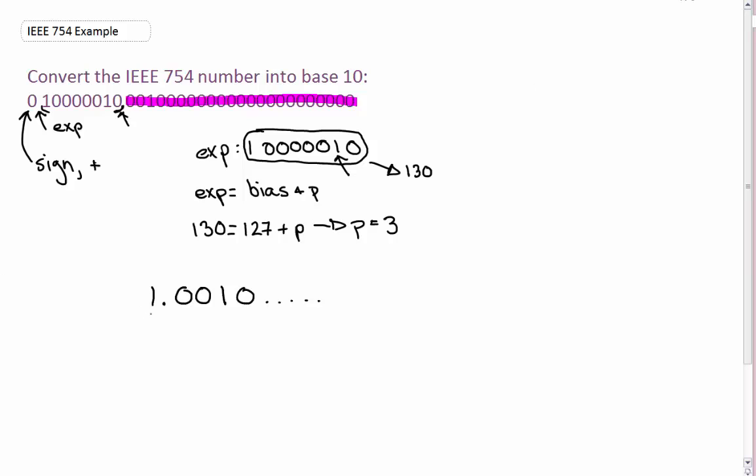So again, this 1 is not included in the fraction with our IEEE number. We just added it on for this part because we took it off when we converted from decimal to IEEE. So you always want to do that. You always want to add on your 1.